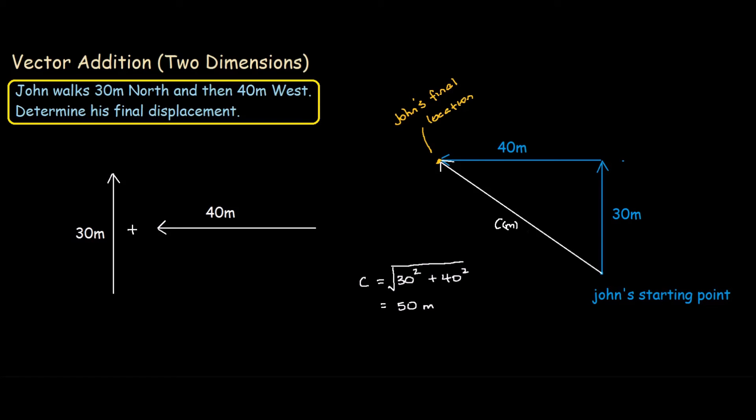That's not enough. When we're talking about displacement, we also must find the direction theta. In basic trigonometry, we know that tan theta equals 40 over 30, and we solve this: theta equals 53.1 degrees.